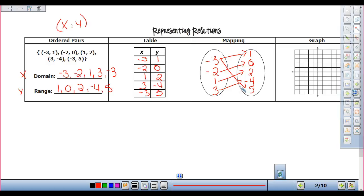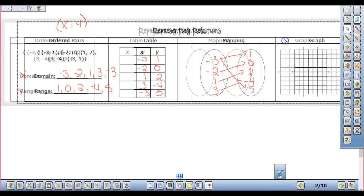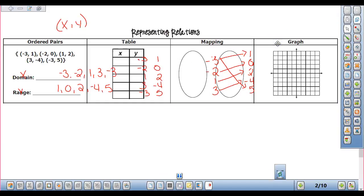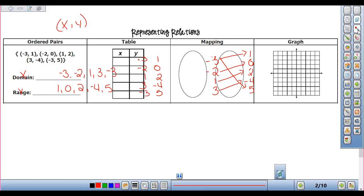And the graph, all the graph is, is we just graph our ordered pairs. First number I go where? It's my x. So I go right or left. My x tells me to go left or right. My y tells me to go up and down.